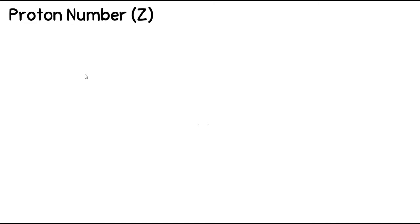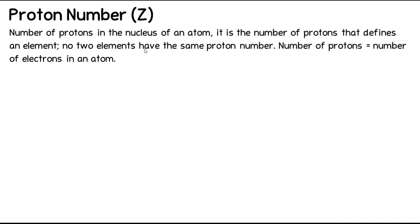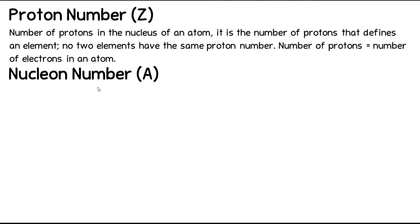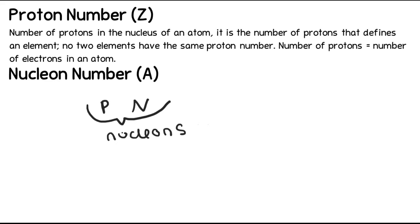The number of protons and electrons in a neutral atom are equal, so if you know the proton number of a neutral atom, you also know its electron number. The next value is the nucleon number, which is very similar to proton number - the only difference is that it includes neutrons too, so it's the total number of neutrons and protons in the nucleus. Protons and neutrons together are collectively called nucleons, because they are in the nucleus.